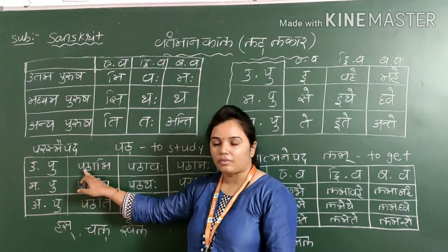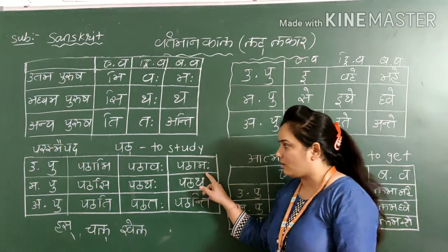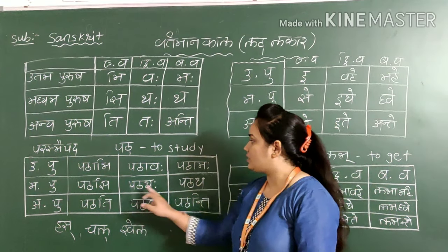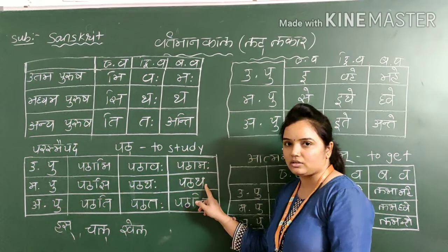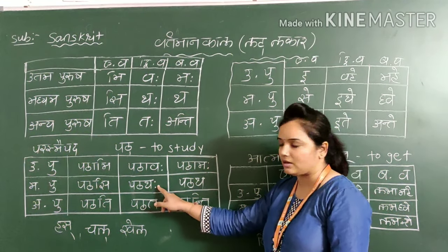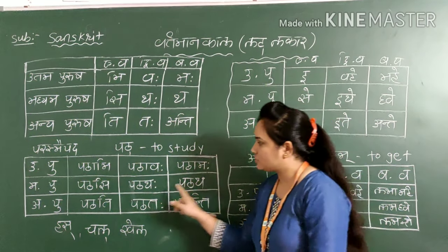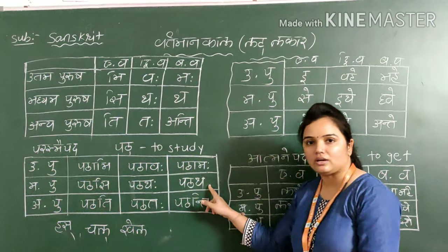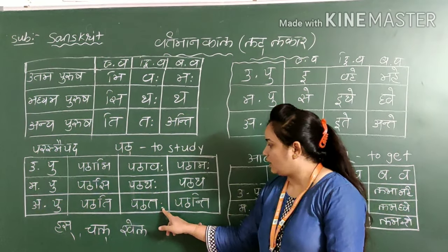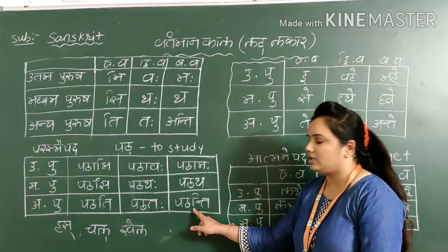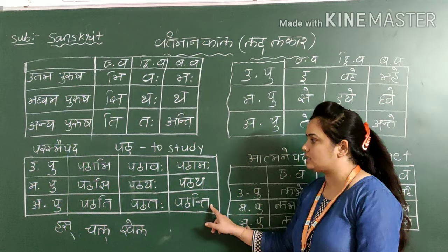So again I will revise: pathami, pathavaha, pathamaha. Pathasi, pathataha, pathataha. These both are different — here thaha is there, here a different ending is there, and here simple 'a' is there. So pathataha and pathataha. Pathati, pathataha and pathanti — anti. Here also, 'a' is silent. Pathanti — anti is there.